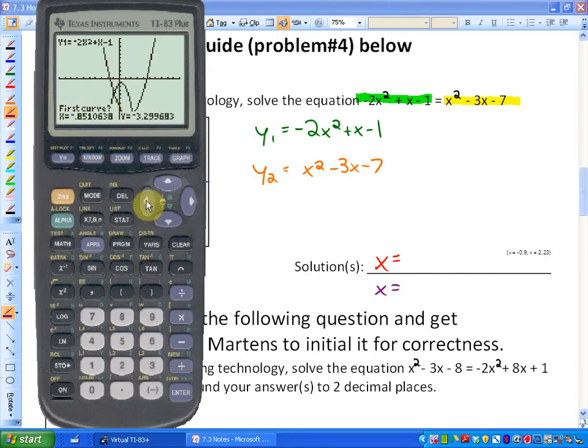It says first curve—in this case it doesn't say left bound, so you actually just go close to where your first intersect is, which is here, press enter. Then it will say second curve—go close to the intersect again, so there's no left bound, right bound, guess—press enter. Then it's going to ask for a guess to where the intersect is, and just press enter again, and there's our value of x. We're not interested in the value of y, we're interested in the value of x.